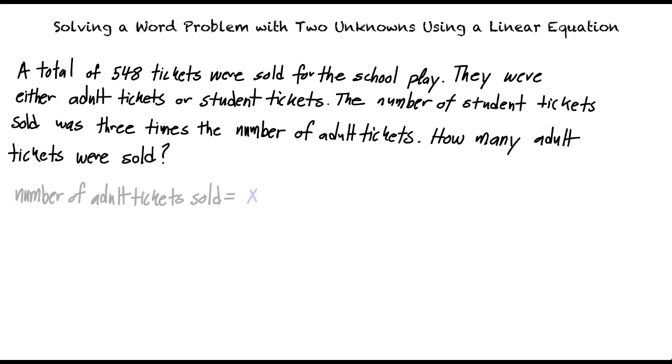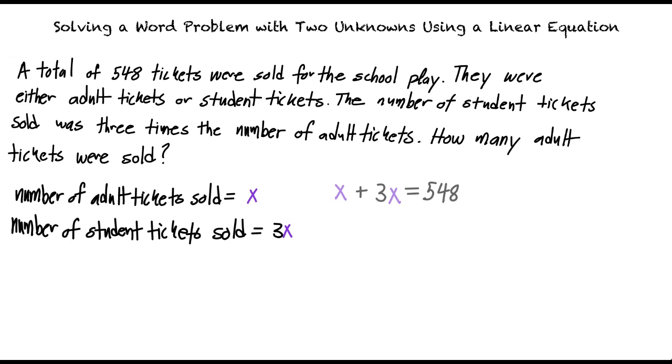We can set x equal to the amount of adult tickets sold. Knowing that the amount of student tickets sold was three times the amount of adult tickets, we will set the number of student tickets equal to 3x. Knowing the total amount of tickets sold is equal to 548, we can set x plus 3x equal to 548.